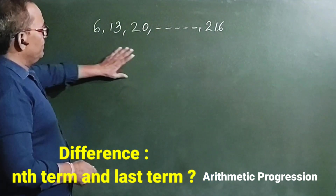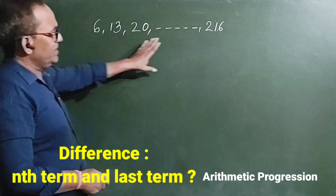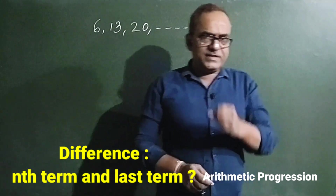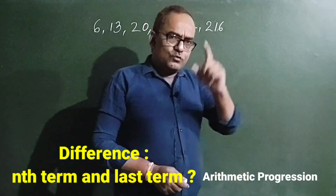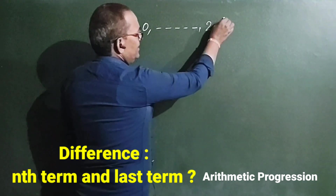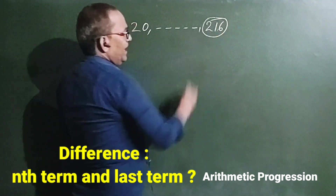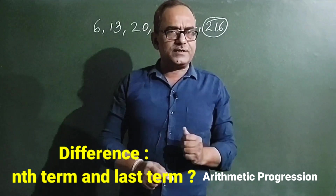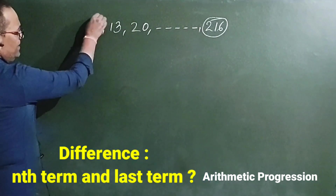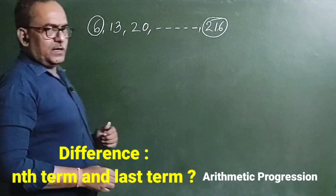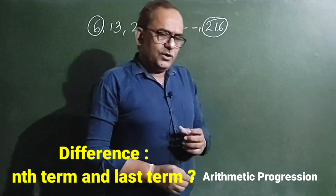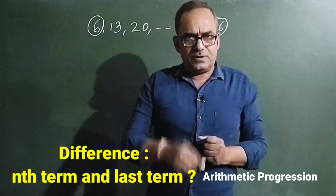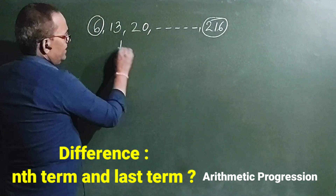Here is an example: 6, 30, 20... and the last term is 260. So 260 is the last term of the arithmetic progression. Here, 6 is the first term. So if we have been asked to find the 20th term, T20, we have to find the 20th term.